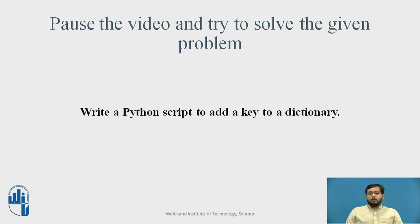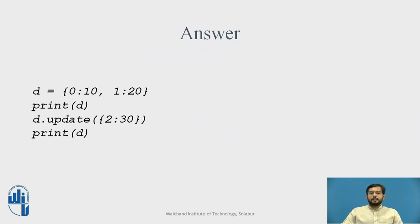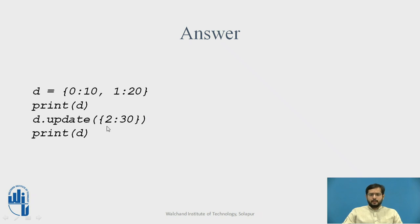Take your time and write a program to add a key to a dictionary. This is the answer. To add a key to a dictionary, we have to use the update function: dictionary name dot update into bracket, in curly braces, you have to specify the new key and its new value. This will add a new key and value to the existing dictionary.